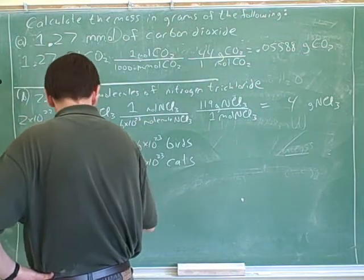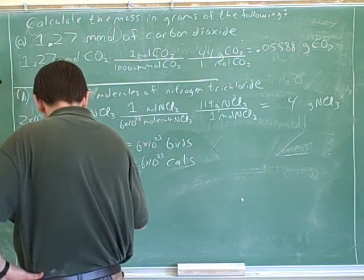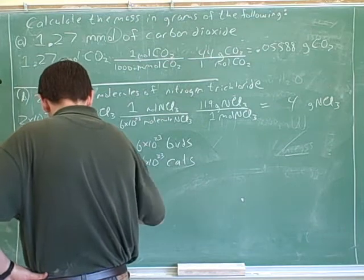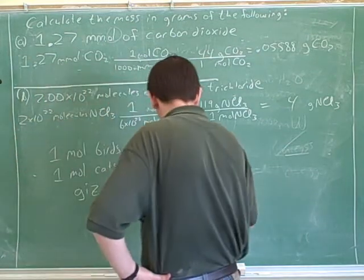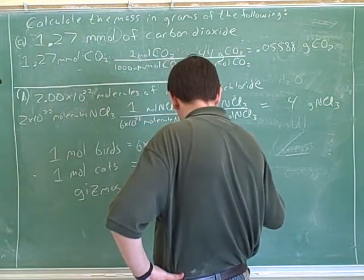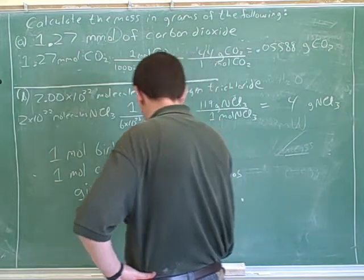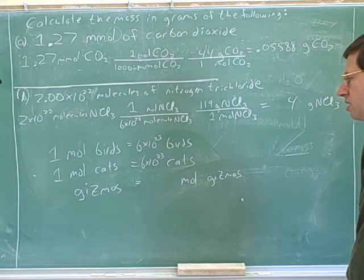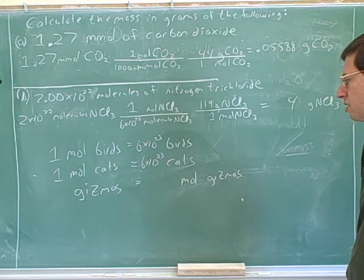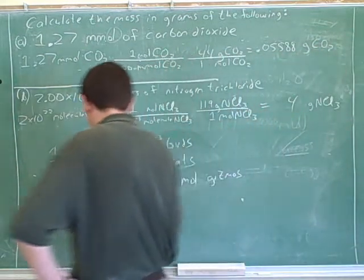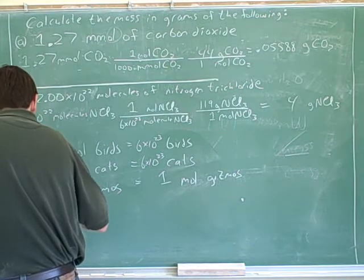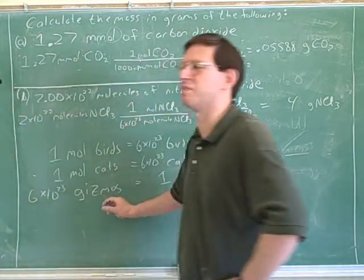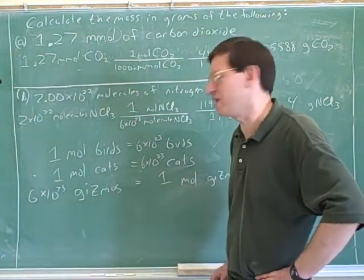So how about if we were trying to set this up between gizmos and moles of gizmos. 6 times 10 to the 23 gizmos is equal to one mole gizmos. And it doesn't matter that you have no idea what a gizmo is. It doesn't matter what a gizmo is.